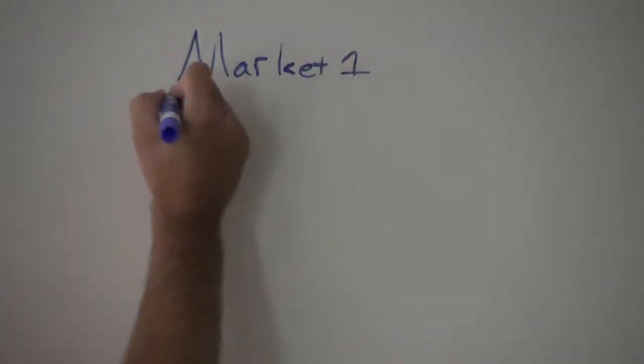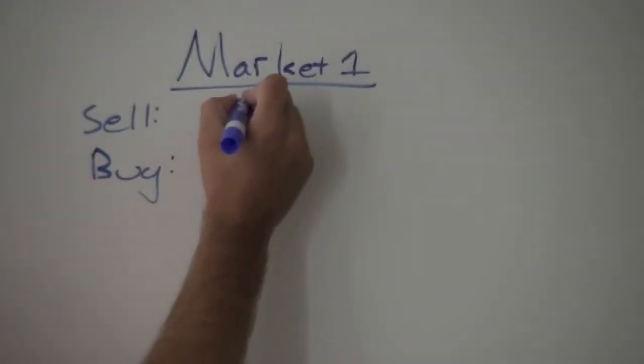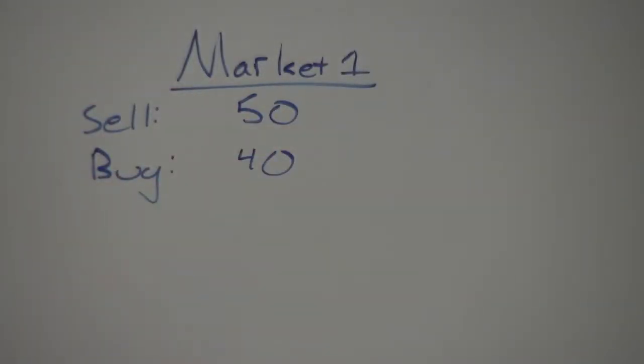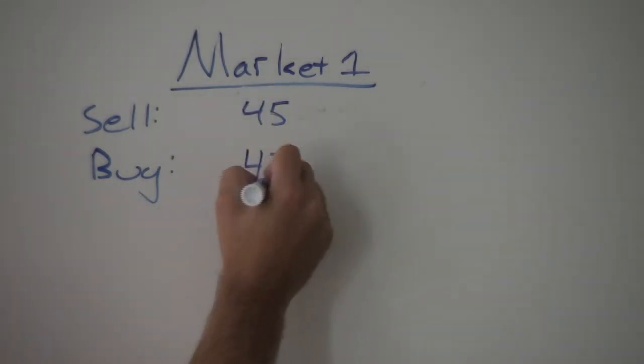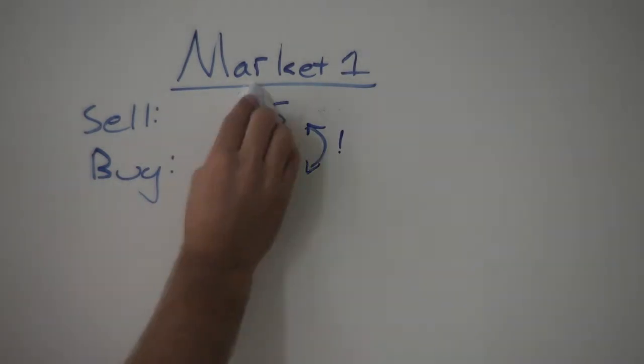We focused on continuous double auctions, a system used in most stock exchanges today. Traders submit orders to buy or sell a stock at certain prices and, when these prices overlap, the traders transact at the first of the two prices submitted and go home happy.